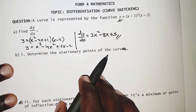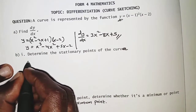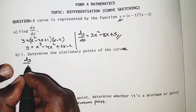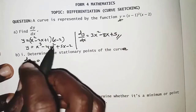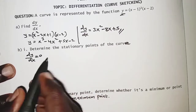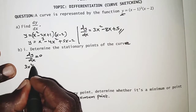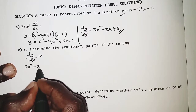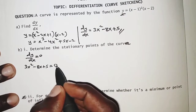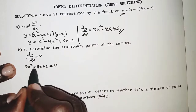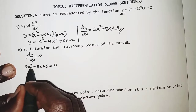For part b, we need to determine the stationary points of the curve. At stationary points, we know that the derivative dy/dx = 0. We already have dy/dx = 3x² − 8x + 5, so we set that equal to 0. We now need to factorize the left-hand side in order to solve for x.